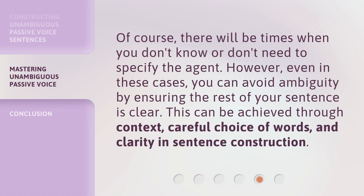Of course, there will be times when you don't know or don't need to specify the agent. However, even in these cases, you can avoid ambiguity by ensuring the rest of your sentence is clear. This can be achieved through context, careful choice of words, and clarity in sentence construction.